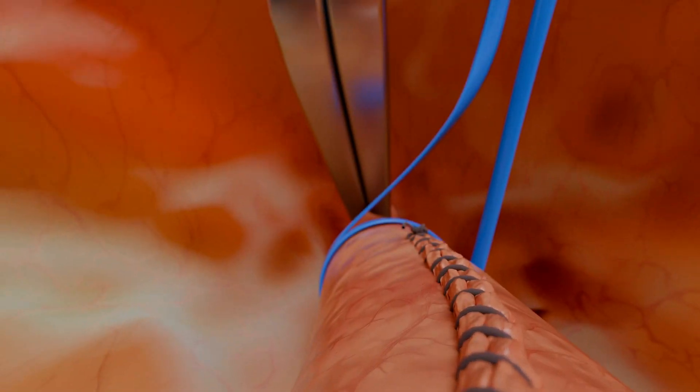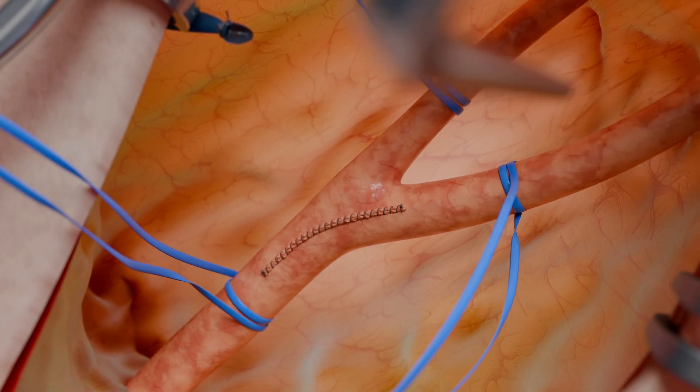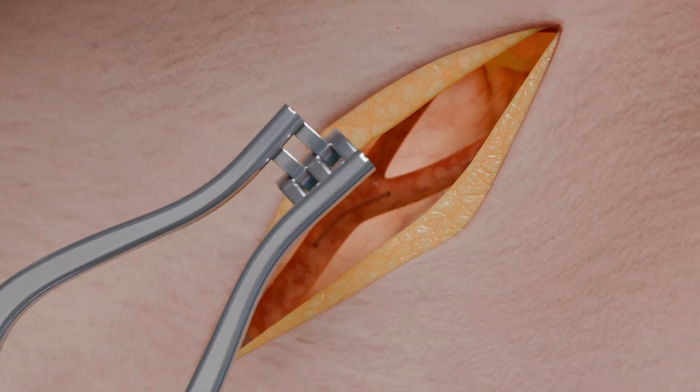After that, the surgeon removes the clamps, starting with the external carotid artery, then the common carotid artery, and finally the internal carotid artery.